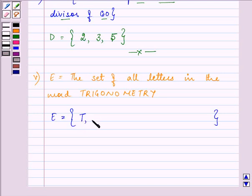So it will be T, R, I, G, O, N and O we will not be repeating it, M, E, T we have already written, R we have already written, so we are left with Y. So this ends the fifth part.